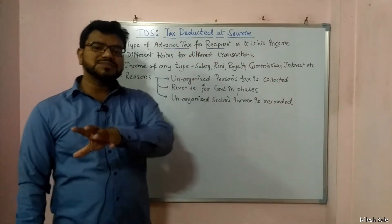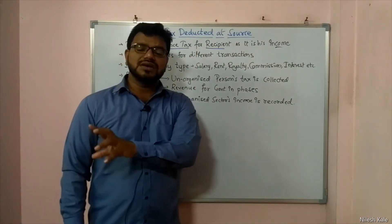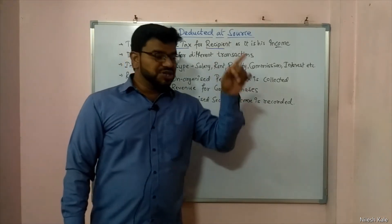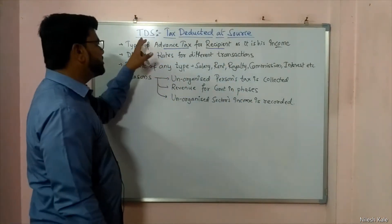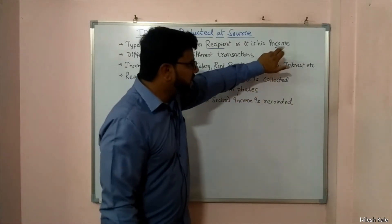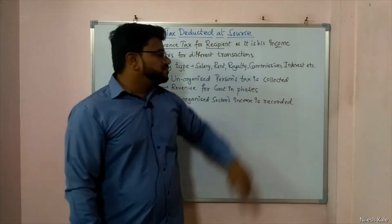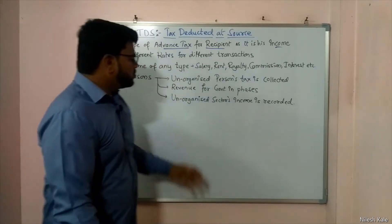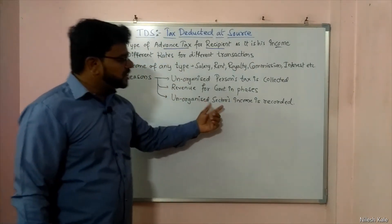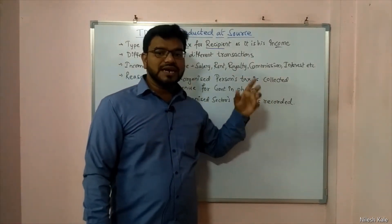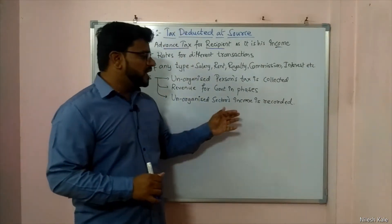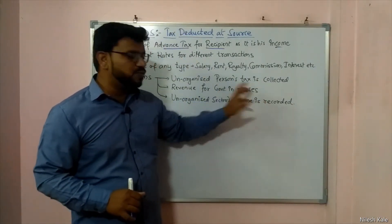However, everybody is making indirect tax payments, but not income tax payments. But they are making income tax payment in the form of TDS, wherever they are getting income. Unorganized sector's income is recorded — this is another important point. I will give you an example so that you will understand these two points.